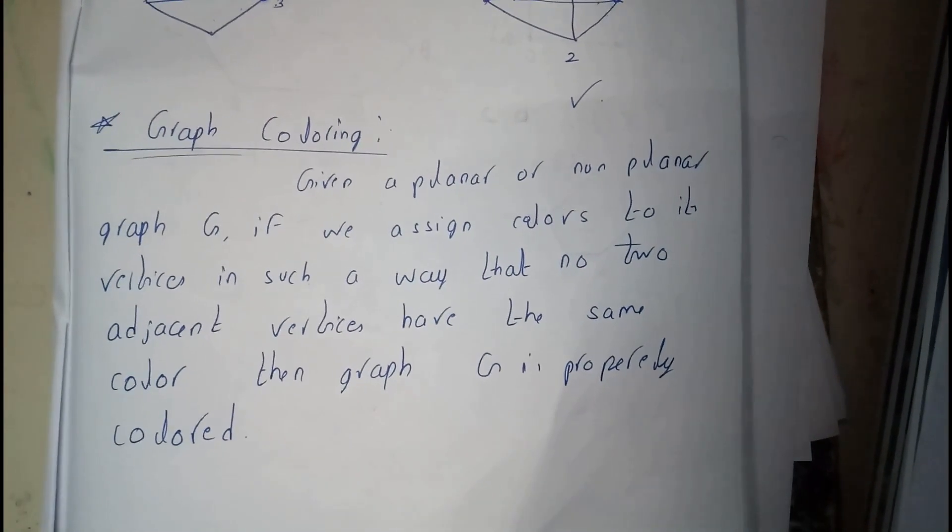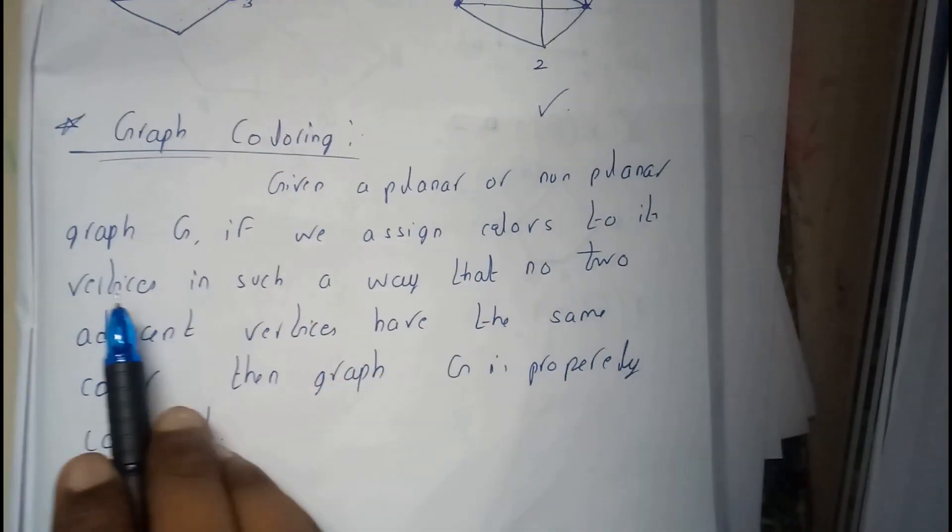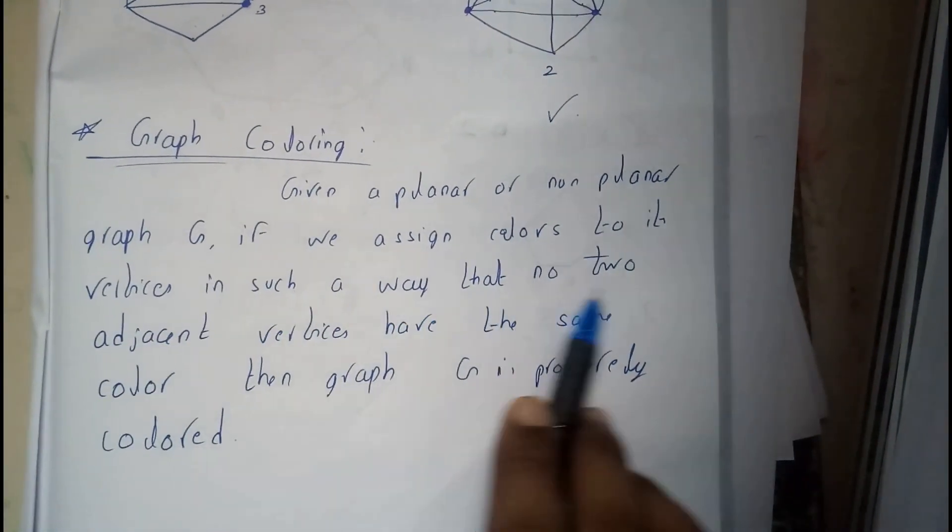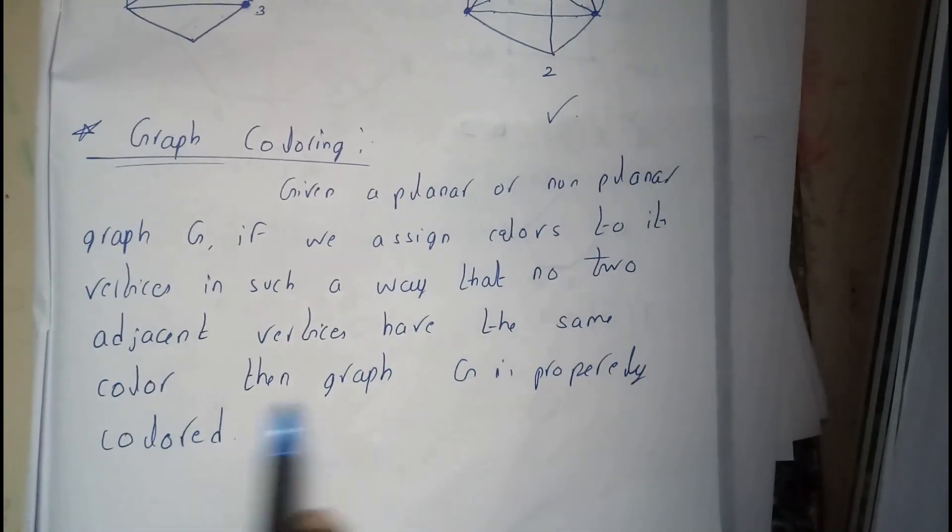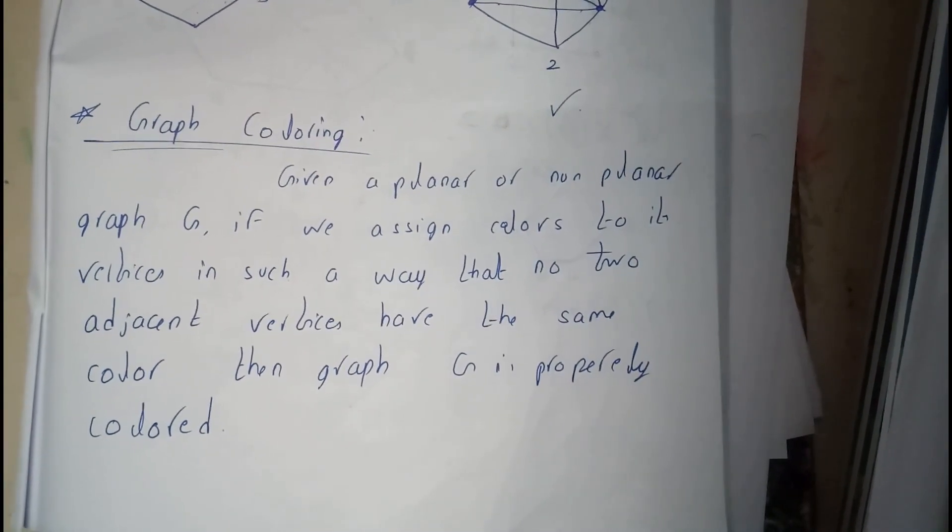So in terms of definition, given a planar or a non-planar graph G, if we assign colors to its vertices in such a way that no two adjacent vertices have the same color, then the graph G is properly colored.